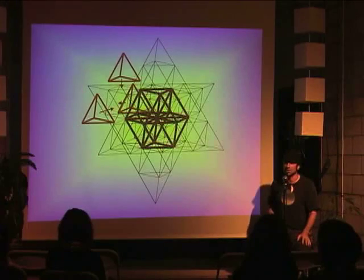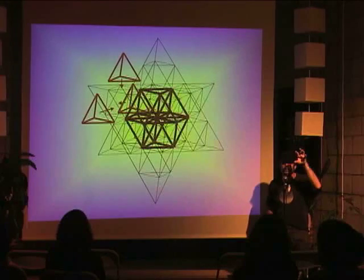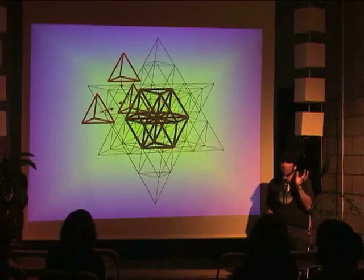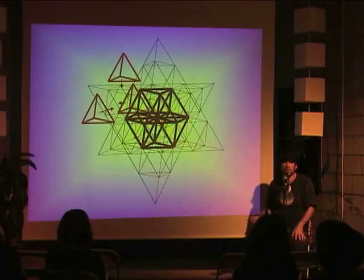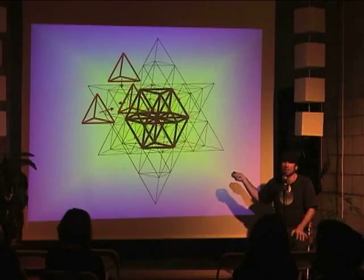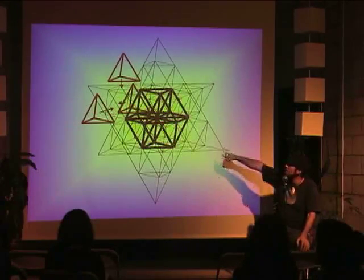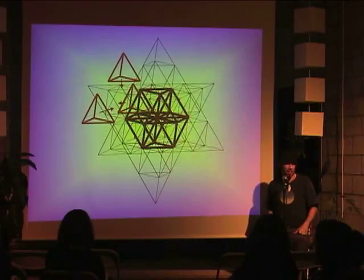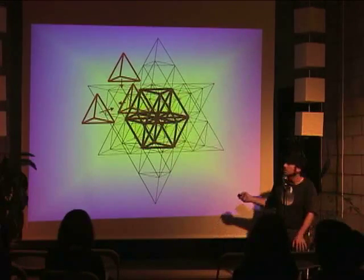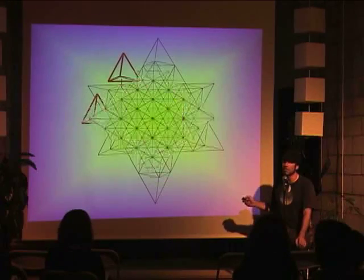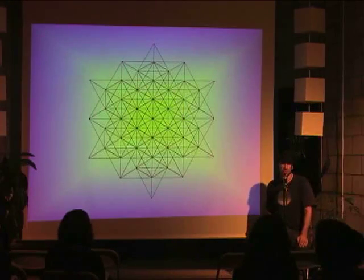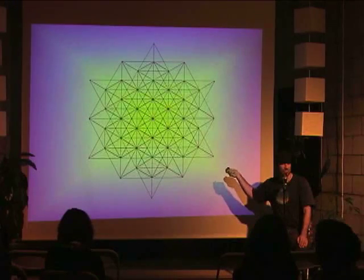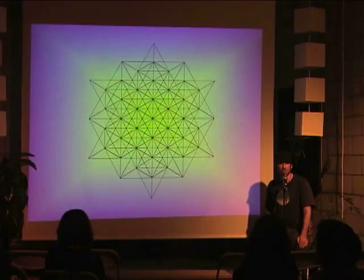Nassim is looking at this and saying the star tetrahedron forms a vector equilibrium in the middle, and that would be what I'm looking for if I'm looking for the fabric of the vacuum. But then he realized this can't be it by itself because these red tetrahedrons on the outside don't have a complete equal and opposite — they're just open-faced on the outside. So he hypothesized maybe he should add more tetrahedrons to the outside, and he added 40 more until he got to a total of 64 tetrahedrons. This is Nassim Haramein's theorized fabric of the vacuum of the universe.